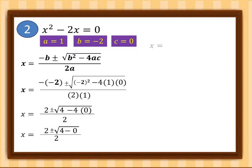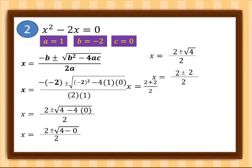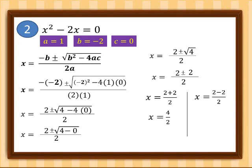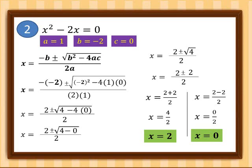Let's simplify further. √4 = 2, so x = (2 ± 2) / 2. Separating plus and minus: x = (2 + 2)/2 = 4/2 = 2, and x = (2 − 2)/2 = 0/2 = 0. So the two roots of our quadratic equation are 2 and 0.